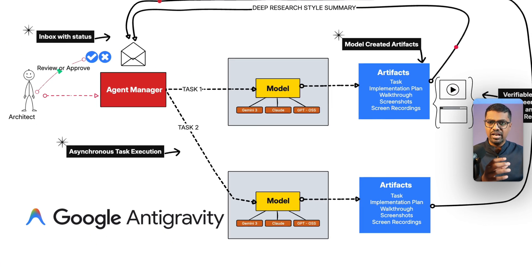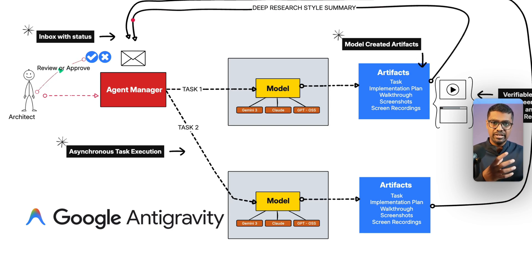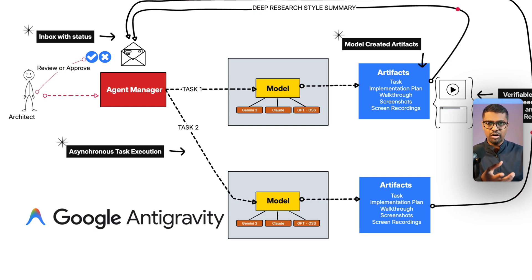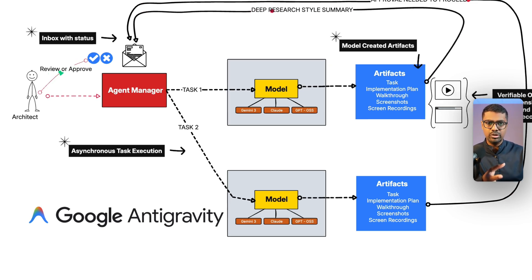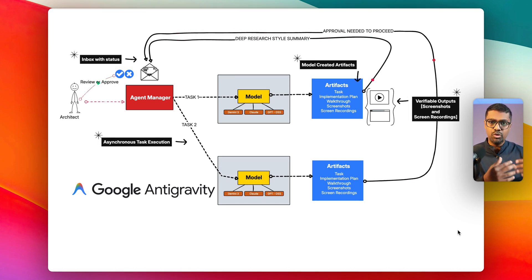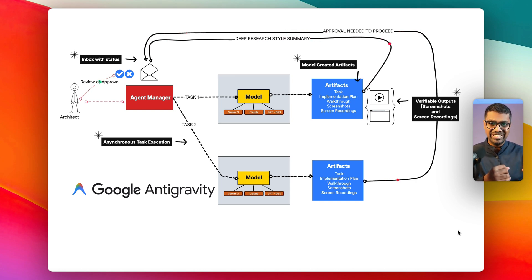For example, I can ask it to add features like visualization for my dividend tracker or a calendar view, and all of this can be done in parallel. I can step out, grab a coffee, and come back — the agent will complete all of these actions. It also creates verifiable artifacts and gives a detailed summary of what was completed, what went wrong, and what the next steps are.